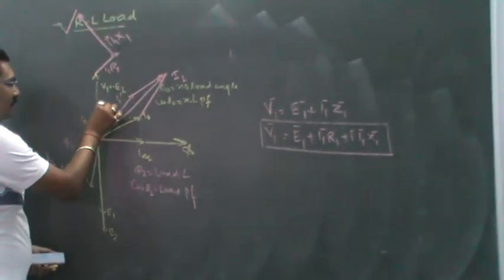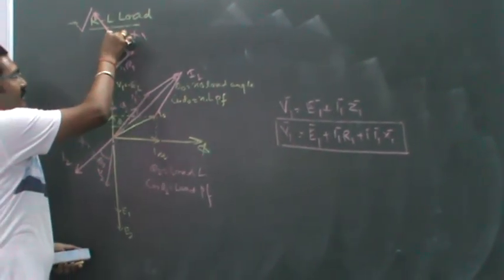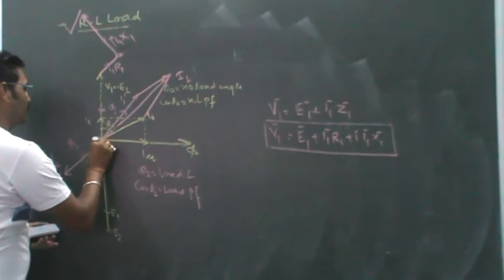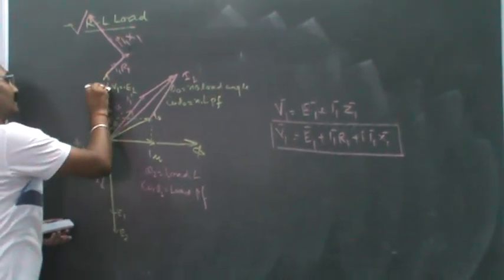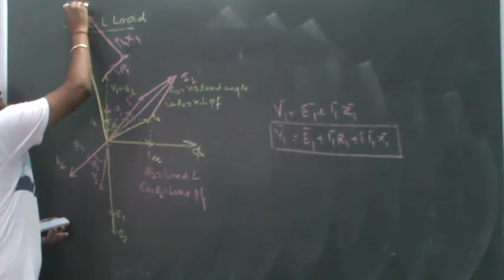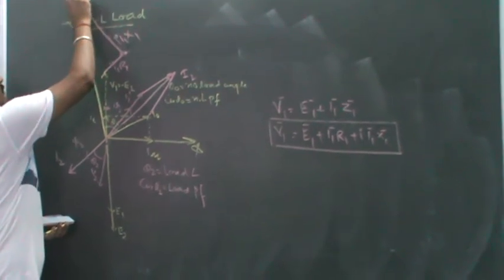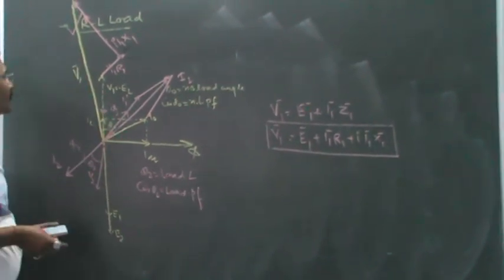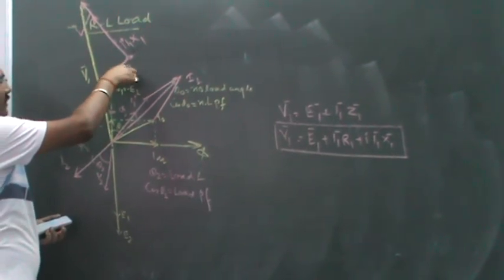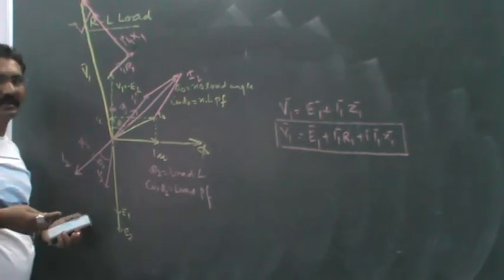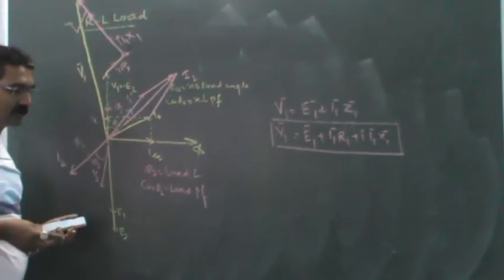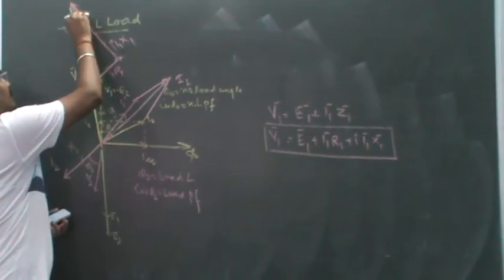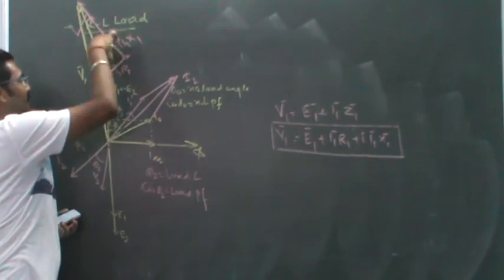This will be j*I1*X1. Now E1 plus I1*R1 plus j*I1*X1—the resultant is V1. You can see this is I1*R1 voltage drop in resistance, this is I1*X1 voltage drop in reactance. If these two vectors are added together, we find the voltage drop in the primary circuit. This will be I1*Z1.